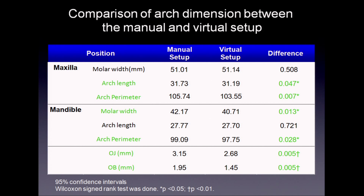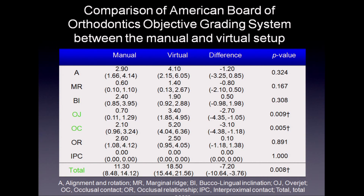The virtual setup model resulted in a smaller arch perimeter than did the plaster setup model by 2.2 mm in the maxillary arch and 1.3 mm in the mandibular arch. The virtual setup also exhibited significantly lower values for over-bite and over-jet. Virtual setup showed larger deductions of ABO scores for over-jet and occlusal contact compared with those of manual setup. Neither group had deductions greater than 25 points.